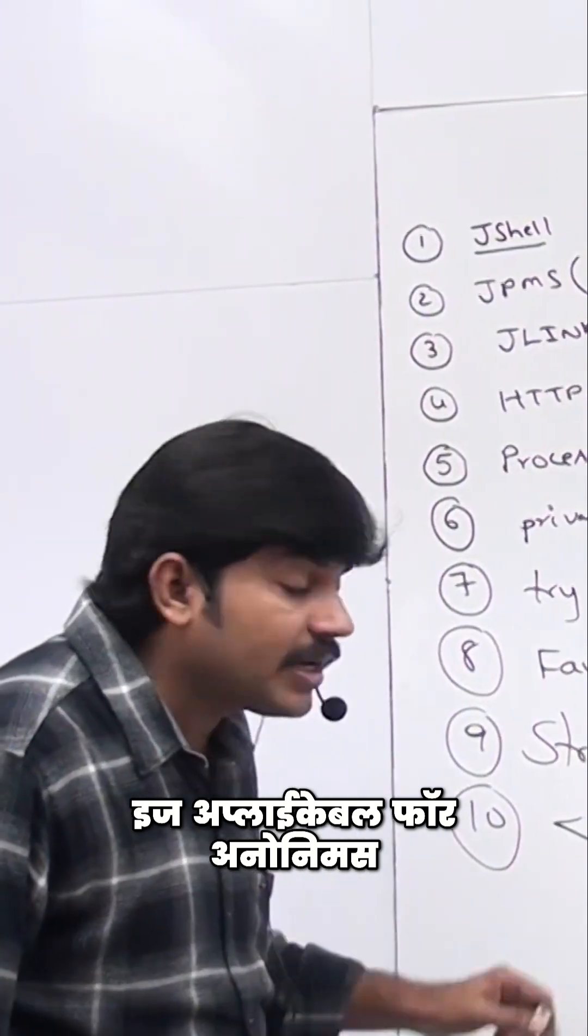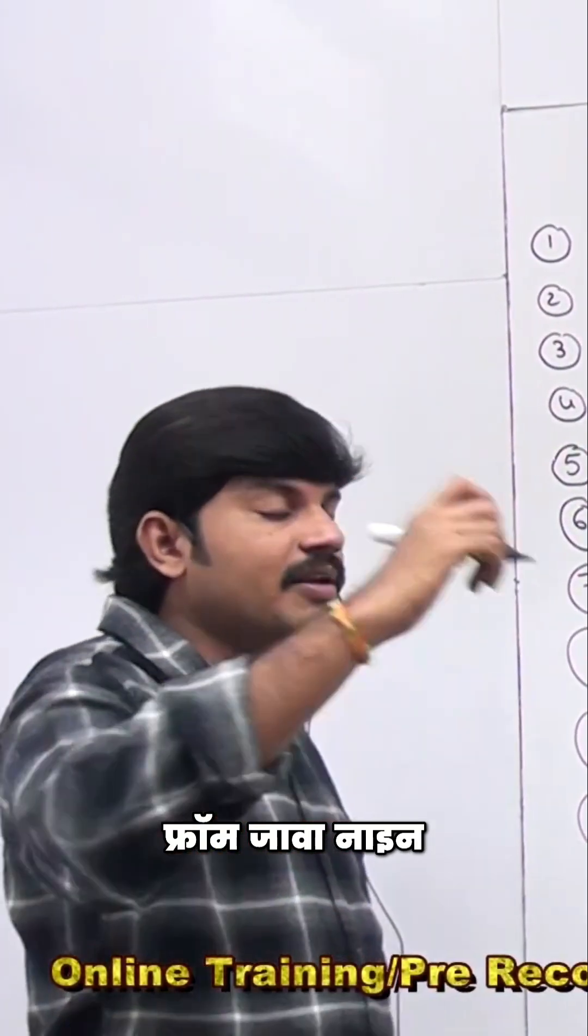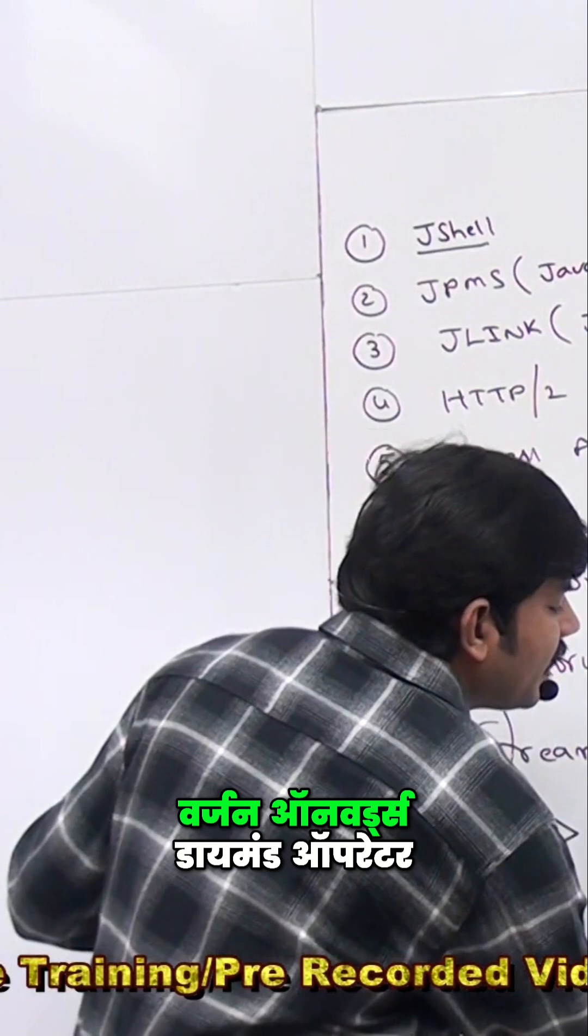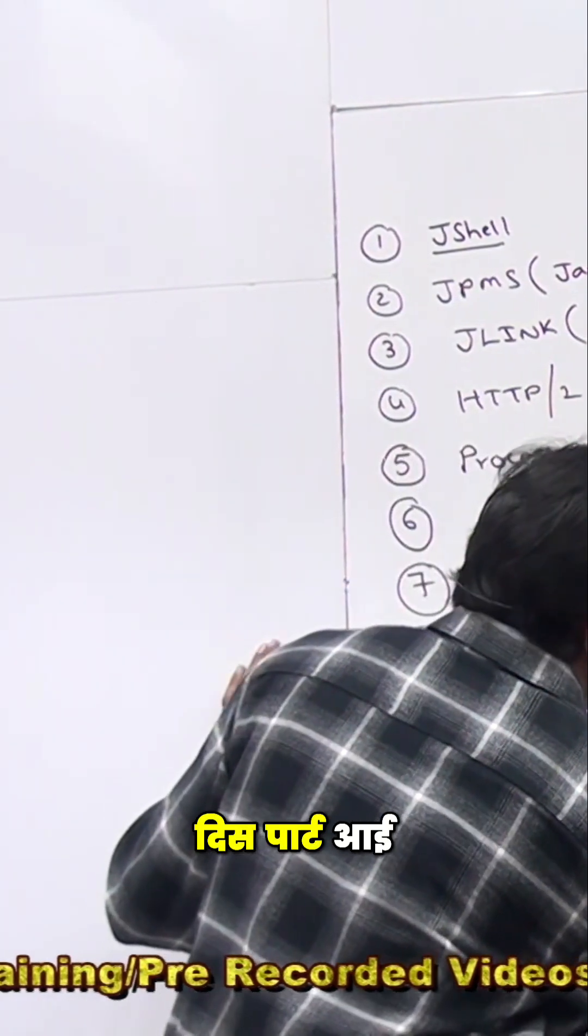Is applicable for anonymous inner classes also from Java 9 version onwards. Diamond operator enhancement. Of course, this part I will discuss, don't worry, sir.